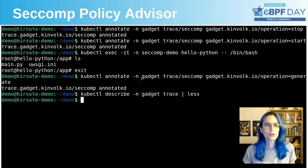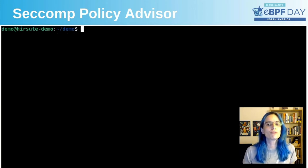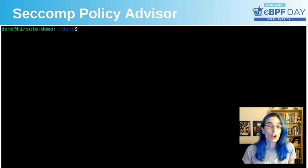In these two cases, I have captured the syscalls necessary for just one action. For a seccomp policy to work, it needs to include not only the desired workloads, but also the calls used while bringing up the pod. To do that, we need to start the trace before creating the pod.